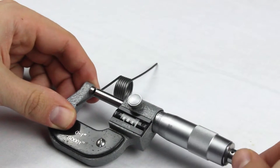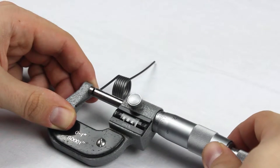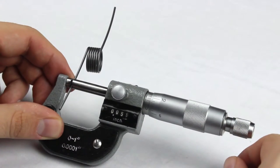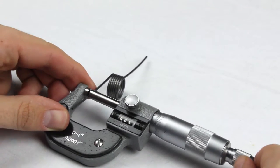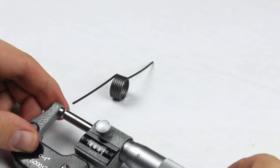First, we will want to measure the wire diameter. Common practice is to measure the wire in two different spots and take the average. For this spring, the wire diameter is .059 inches.